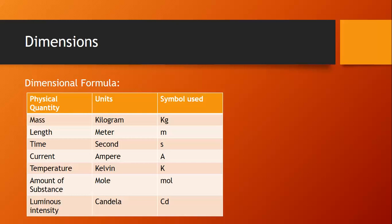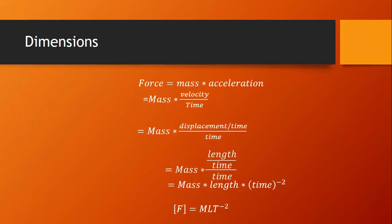Let me give an example. Let us take the physical quantity force. We all know force equals mass into acceleration. I am writing mass into velocity by time, and mass into displacement by time divided by time. So I can get the dimensions of force as 1 in mass, 1 in length, and minus 2 in time. So now writing the dimensional formula for force in terms of basic physical quantities — mass, length, time — that will be F equals MLT to the power minus 2. Such an expression for a physical quantity in terms of the basic quantities is called the dimensional formula.